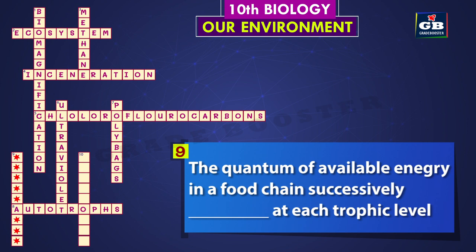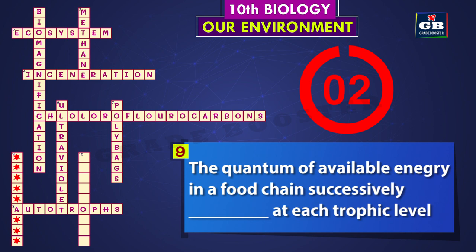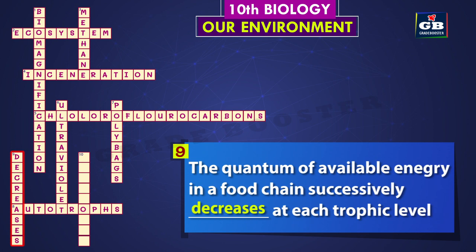Nine down: the quantum of available energy in a food chain successively dash at each trophic level. The answer is decreases. The quantum of available energy in a food chain successively decreases at each trophic level.